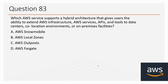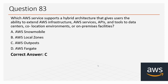Question number 83: Which AWS service supports a hybrid architecture that gives users the ability to extend AWS infrastructure, AWS services, APIs and tools to data centers, co-location environments or on-premises facilities? Options: A. AWS Snowmobile, B. AWS Local Zones, C. AWS Outposts, D. AWS Fargate. The correct option is C, AWS Outposts.